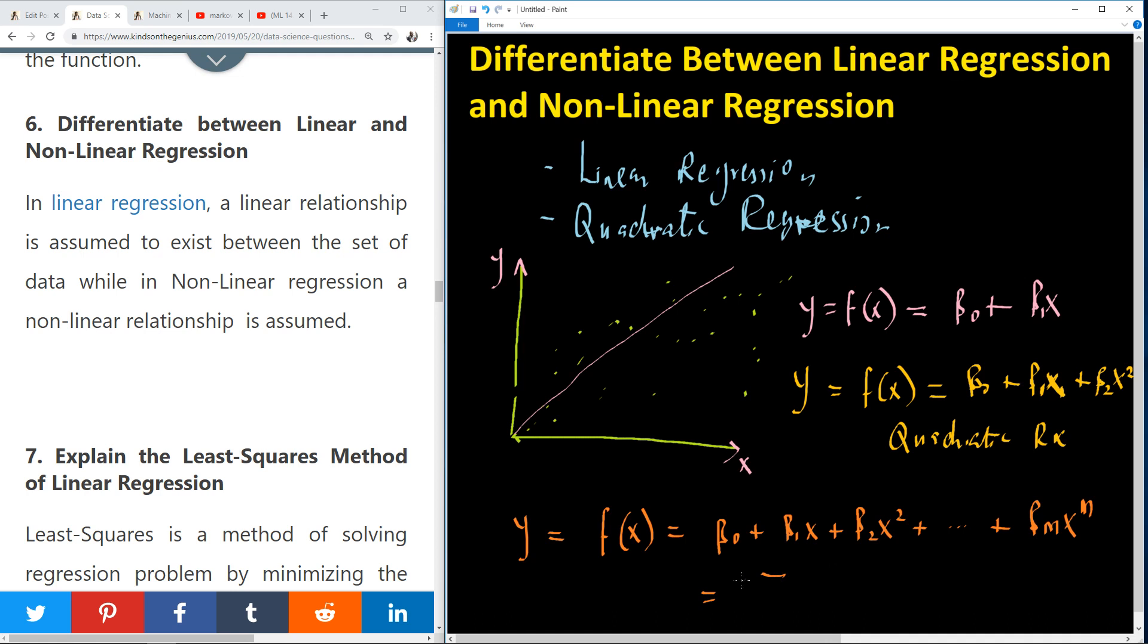So then we try to find a way to determine the coefficients beta 0, beta 1, beta 2, all the way to beta m.